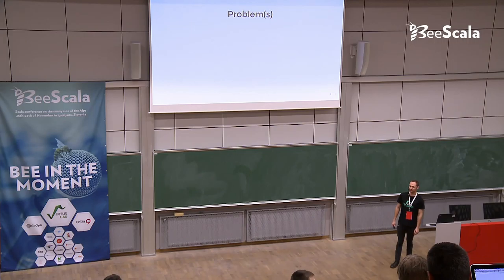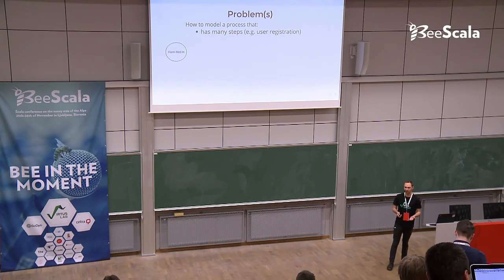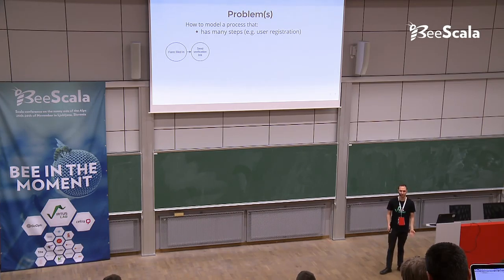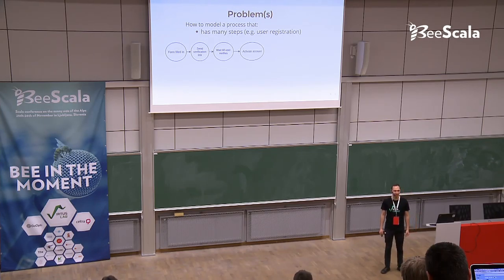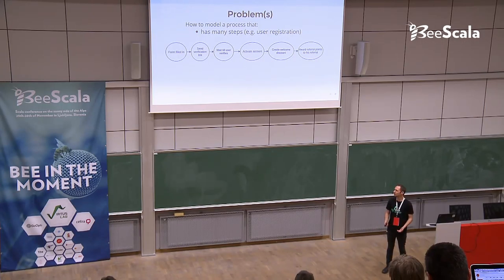Let's start with defining the problems that we have. We'd like to model a process that can have many steps. The example of such a process is user registration. It doesn't always have to be simple — you fill in the form and voilà, you've got a new user. It may involve a lot of things like sending a verification email and waiting until the user clicks it, then activating his account and creating a welcome discount or awarding referral points.